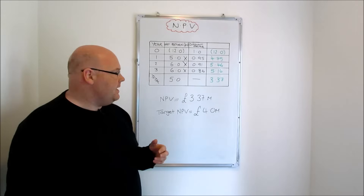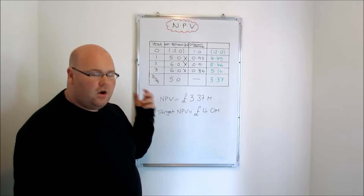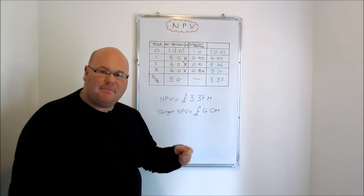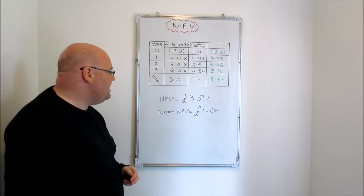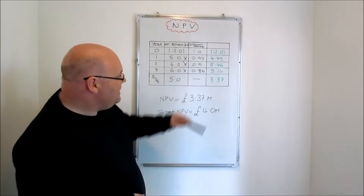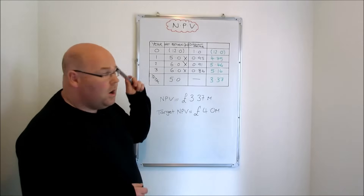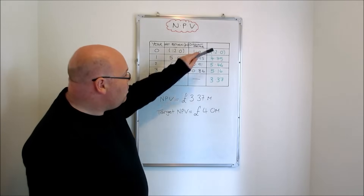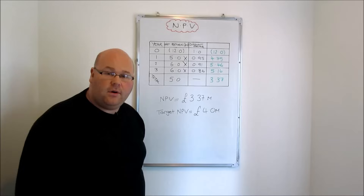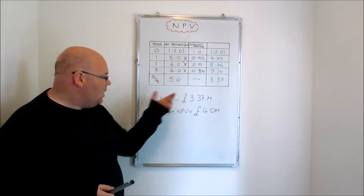By the end of year three, the project has returned another 6 million pounds, but we've had to wait a full 36 months — that's not as valuable as having it after two years, one year, or certainly not as valuable as right now. To work out the net present value, we add these discounted figures together: 4.75 plus 5.46 plus 5.16, remembering to subtract the initial cost of 12 million pounds. That leaves us with 3.37 million pounds — our NPV.